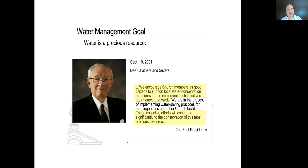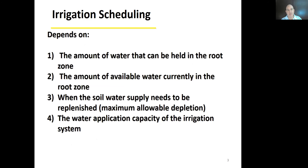So how do we actually schedule irrigation? It's a little complicated because it depends on several things: the amount of water that can be held in the root zone, the amount of available water currently in the root zone, and when the soil water supply needs to be replenished — which is the maximum allowable depletion, reviewed in the rule of halves.